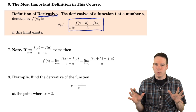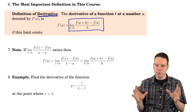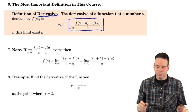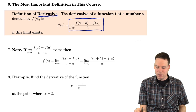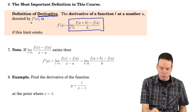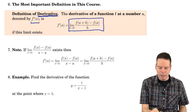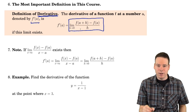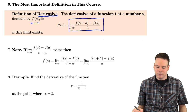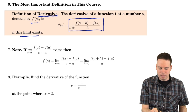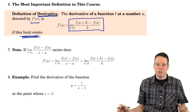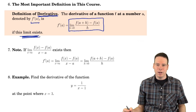We first need to start with: what is a derivative? What is a derivative of a function at a point? The derivative of a function f at a number a, which we denote by f prime of a — the function name with a little prime or dash above it — is defined to be this limit, provided it exists. If the limit doesn't exist, then the derivative doesn't exist, because the derivative is defined to be the value of the limit.